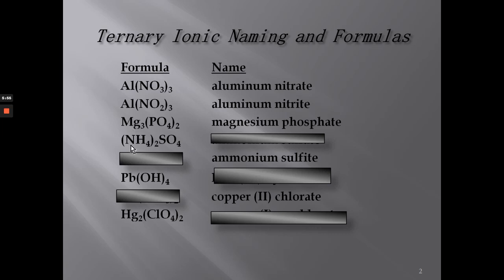We know this is the polyatomic ion ammonium from the previous example. Since it has a plus one charge, I need two ammoniums because a sulfate polyatomic anion has a negative two charge. So two minus two equals zero, and it's called ammonium sulfate.